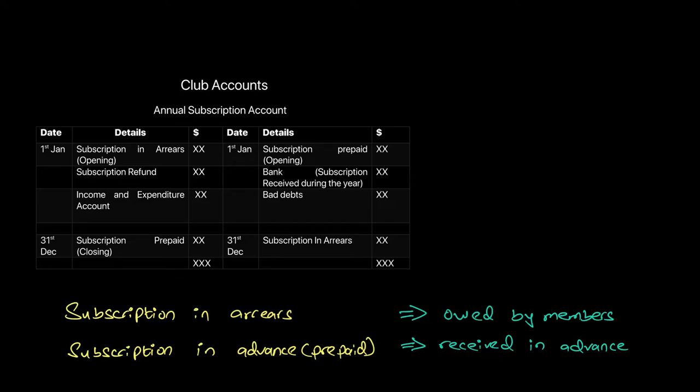The first discussion we shall start with is the calculation of annual subscription income. The annual subscription fee, which is the membership fee, is the primary source of income for any club or not-for-profit organization. It's very important to do the calculation here because we need to calculate the amount to transfer to the income and expenditure account for annual subscription.